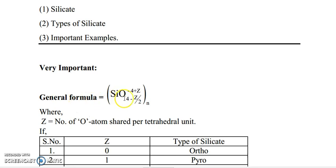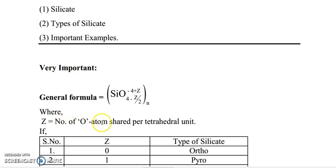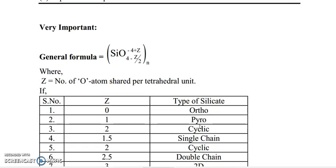Please write down. This is the general formula for silicate: SiO₄ with superscript (minus 4 + Z) in subscript (4 minus Z/2), whole N, where Z is the number of oxygen atoms shared per tetrahedral unit.